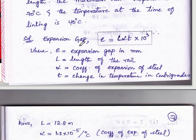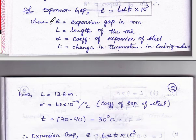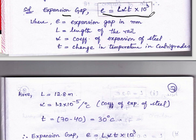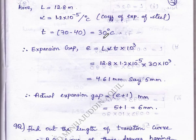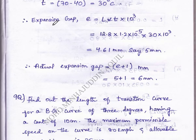The expansion gap can be calculated by the formula: E equals L·α·t·10³, where E is the expansion gap in mm, L is the length of the rail, α is the coefficient of expansion of steel, and t is the change in temperature. All these values are given in the question, so we substitute into the equation.